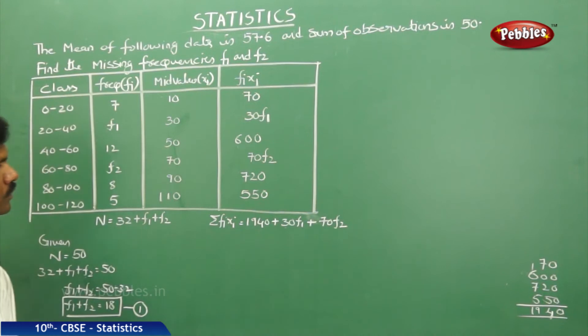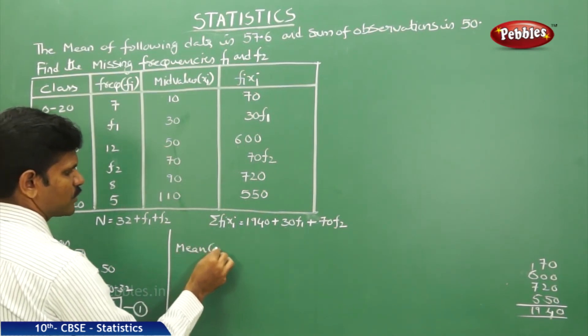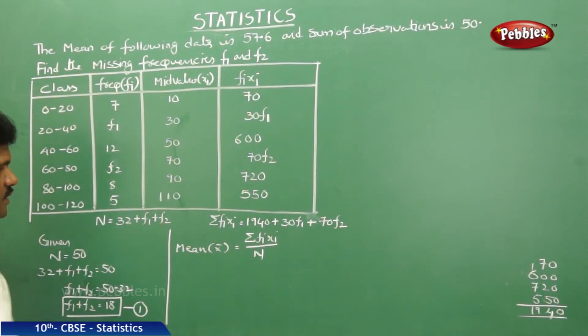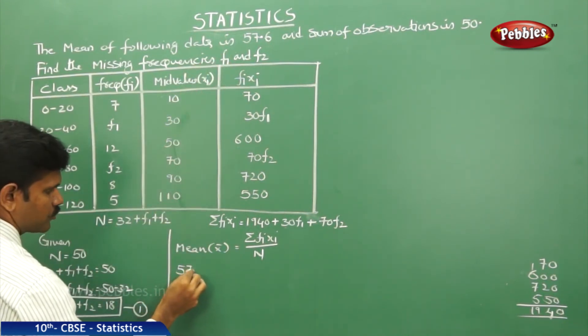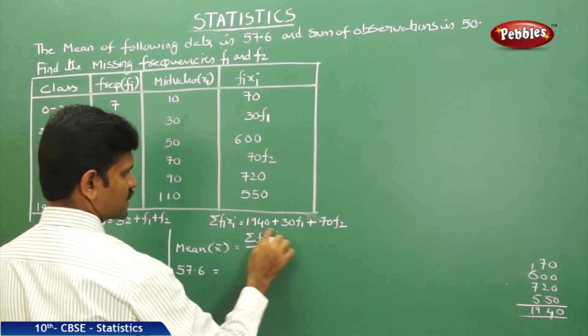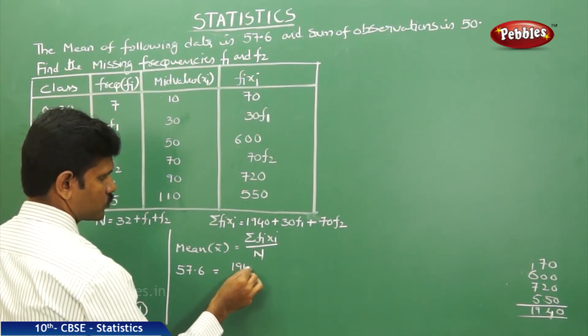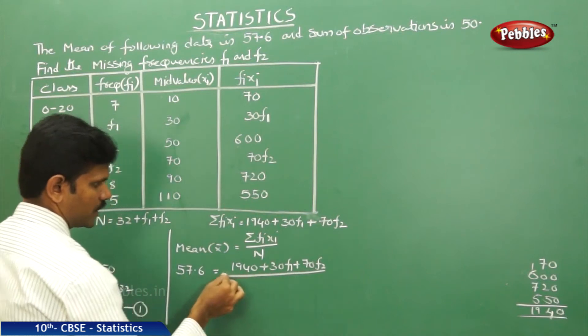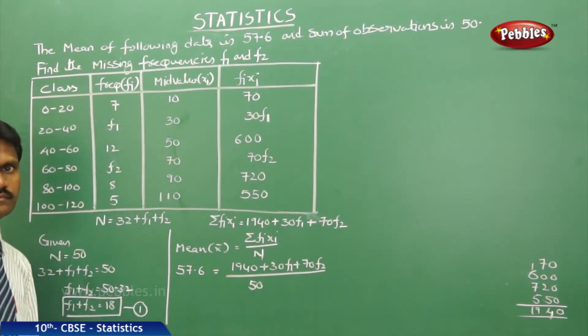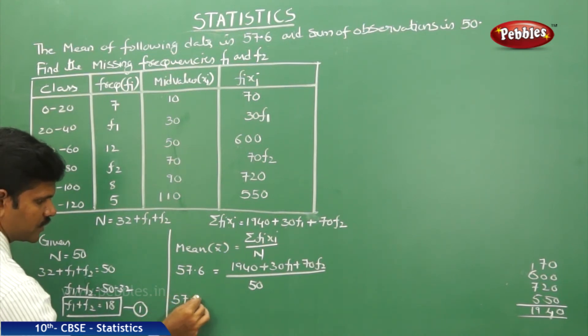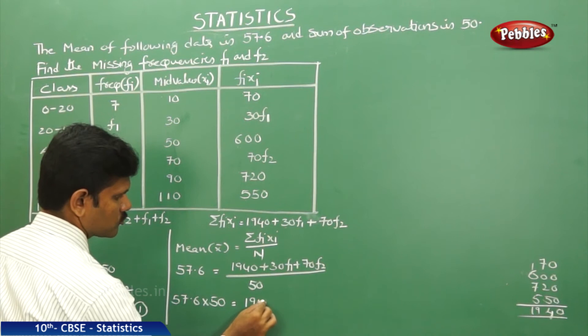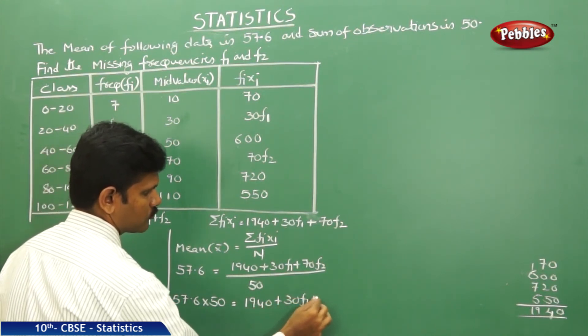Now, let us write your formula. Mean X bar is equal to sigma Fi Xi by N. That is, 1940 plus 30F1 plus 70F2 whole by N nothing but 50. Next, cross multiply, 57.6 into 50. That is 2880 equal to 1940 plus 30F1 plus 70F2.